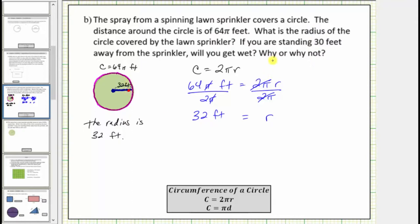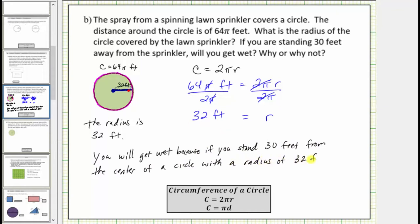You will get wet because if you are standing 30 feet from the center of a circle with a radius of 32 feet, you will be inside the circle. And of course if you are inside the circle, you will get wet. I hope you found this helpful.